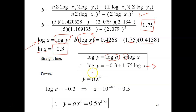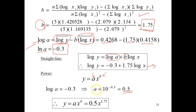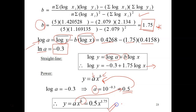The power equation is y equals a times x to the b. b is already solved — b equals 1.75. You still need to solve for a. Since log a equals negative 0.3, you just find the antilog, and you will get a equals 0.5. Once you have both values, substitute them back into the power equation.